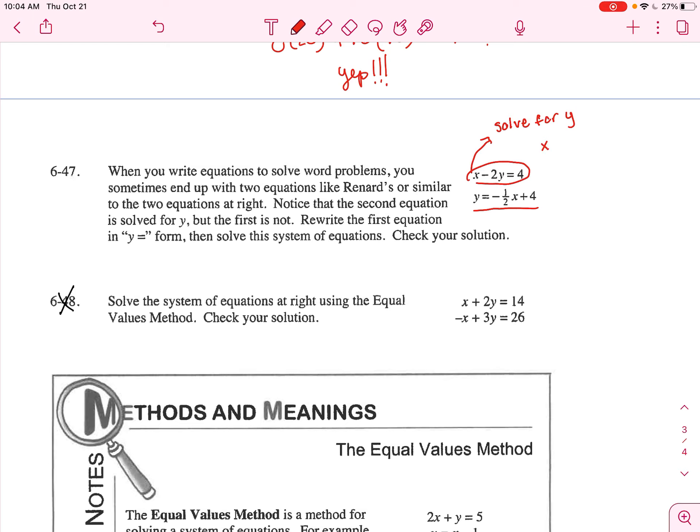So let me just rewrite the equation. X minus 2Y equals 4. I'm going to subtract X from both sides to get negative 2Y equals negative X plus 4. Divide by negative 2. When we do that, we get Y equals negative divided by a negative is a positive. So we have a positive 1 half X minus 2. So I rewrote that equation.